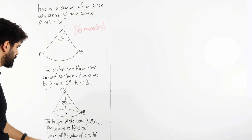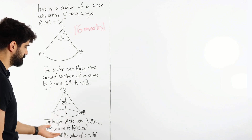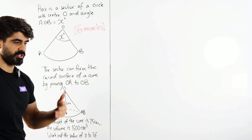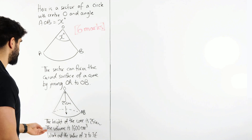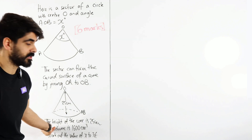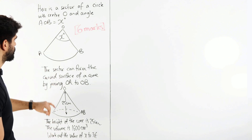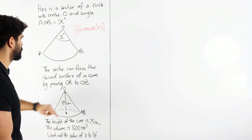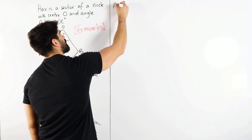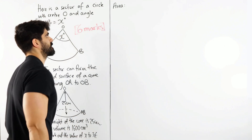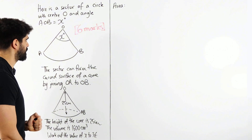So I'll start off with the fact that the volume is 1600. I always tell you guys to start off with the given statements. You could also start off by saying the area of the sector is equal to the curved surface area — I'll explore both options. For the area approach, how do you work out the area of a sector?